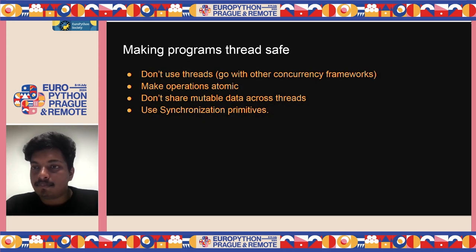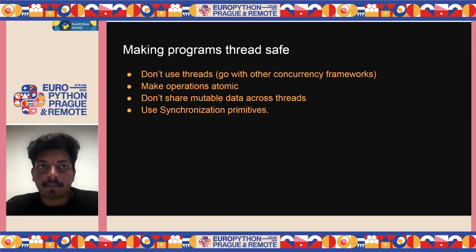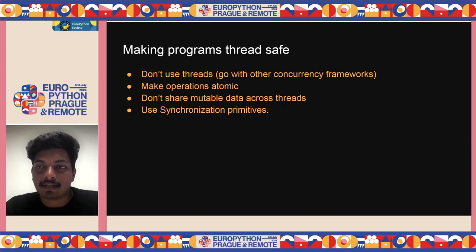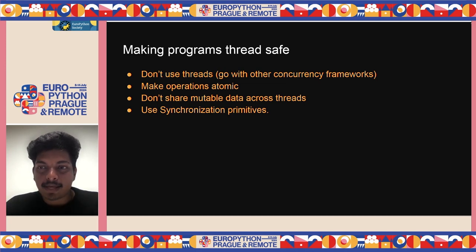The recommended approach: if you want concurrent execution, consider alternatives to threads like coroutines as Anthony Shaw mentioned. Make your operations atomic for consistent results. Stop sharing mutable data across threads — if two threads access the same mutable resource, it will likely cause problems unless you use synchronization primitives, which will be covered next.